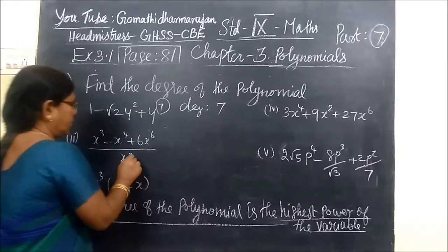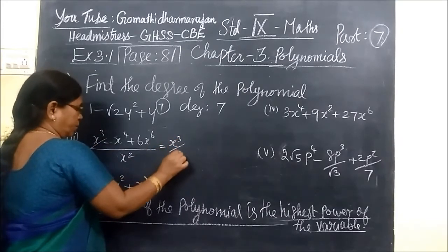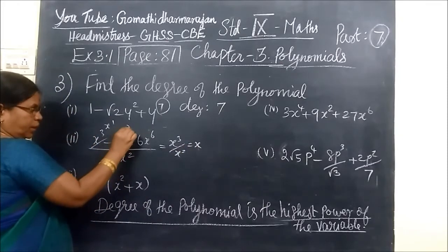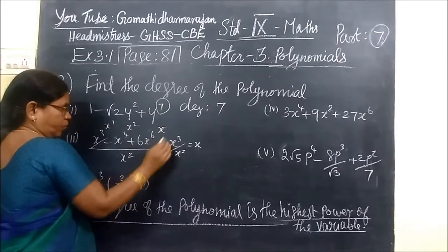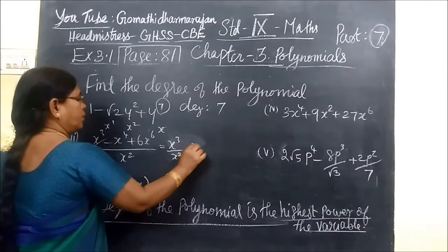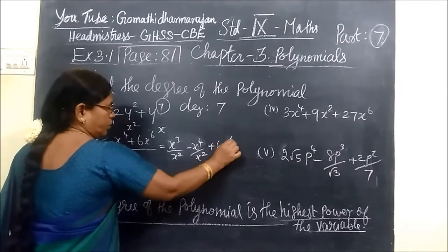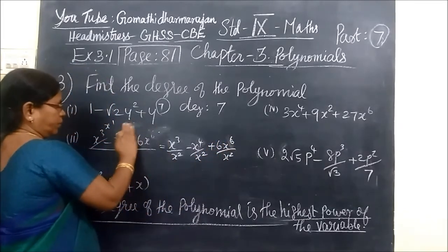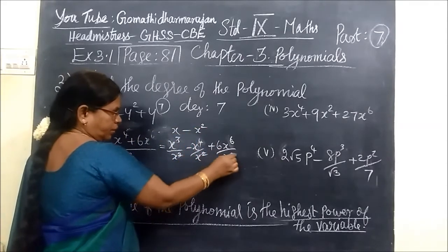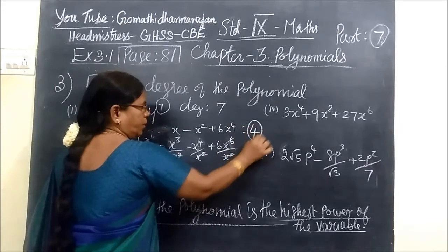Here the highest power — you have to divide. If you divide x cubed by x squared, it is x only. So here x power 1, here x power 2, here x power 4. So you divide each term by x squared. Then x power 4 by x. Directly you can write the answer — x power 4. Then if we cancel x squared, plus 6 x power 4. So the degree of the polynomial is 4.